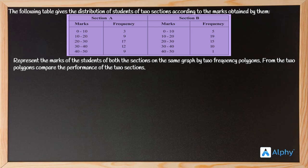We need to draw two separate frequency polygon graphs, one for each section, but we need to represent both of those frequency polygons in a single graph.